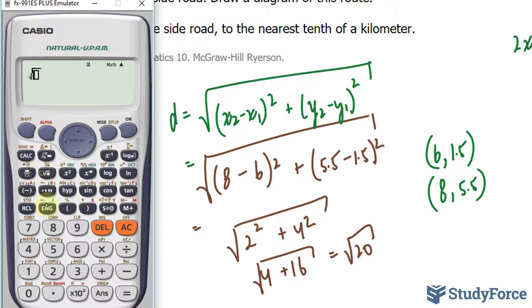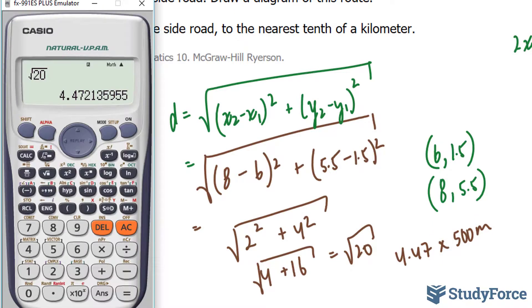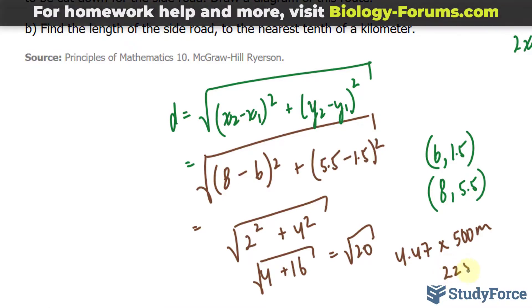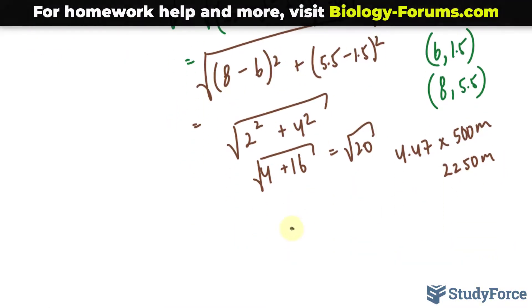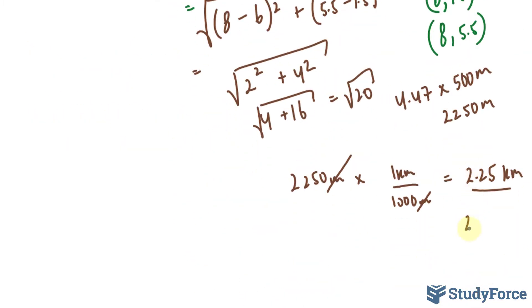Which is approximately 4.47. And that's 4.47 units. Each unit represents 500 meters. So I'll take this, multiply it by 500 meters using my calculator. I'll just use 4.5 for simplicity's sake. We end up with 2,250 meters. We need to change this to kilometers. 2,250 meters times 1 kilometer per every 1,000 meters. This means that the distance from R to that point C is 2.25 kilometers. And remember, they want it to the nearest tenth. So it's 2.3 approximately.